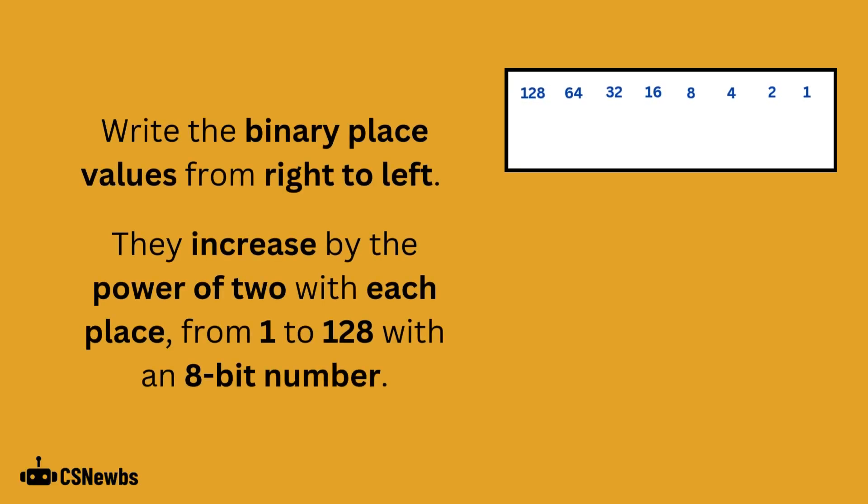Write out the binary place values from right to left. They increase by the power of 2 with each place. So for an 8-bit number, it starts at 1 and doubles each time to 128.